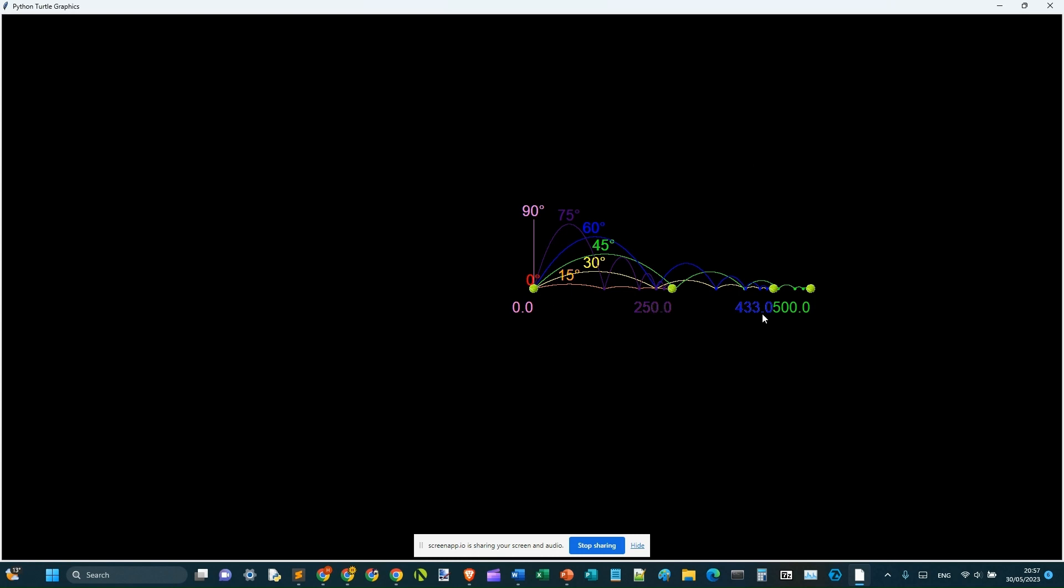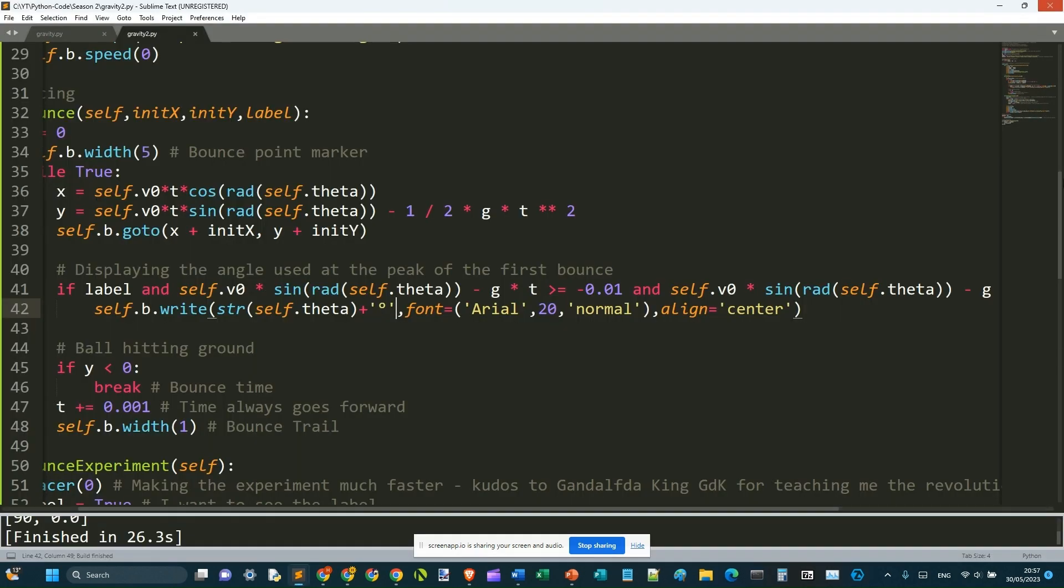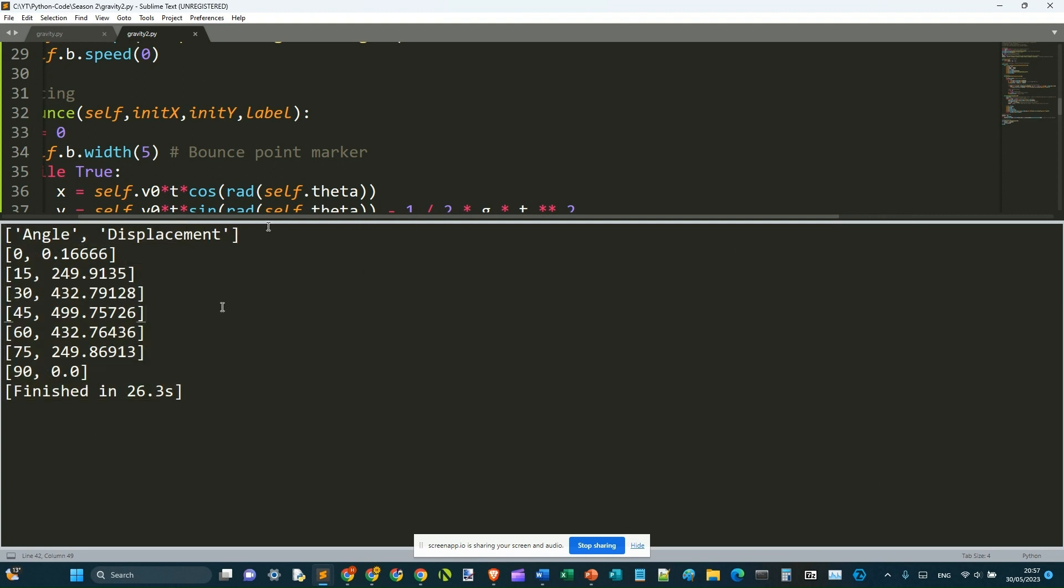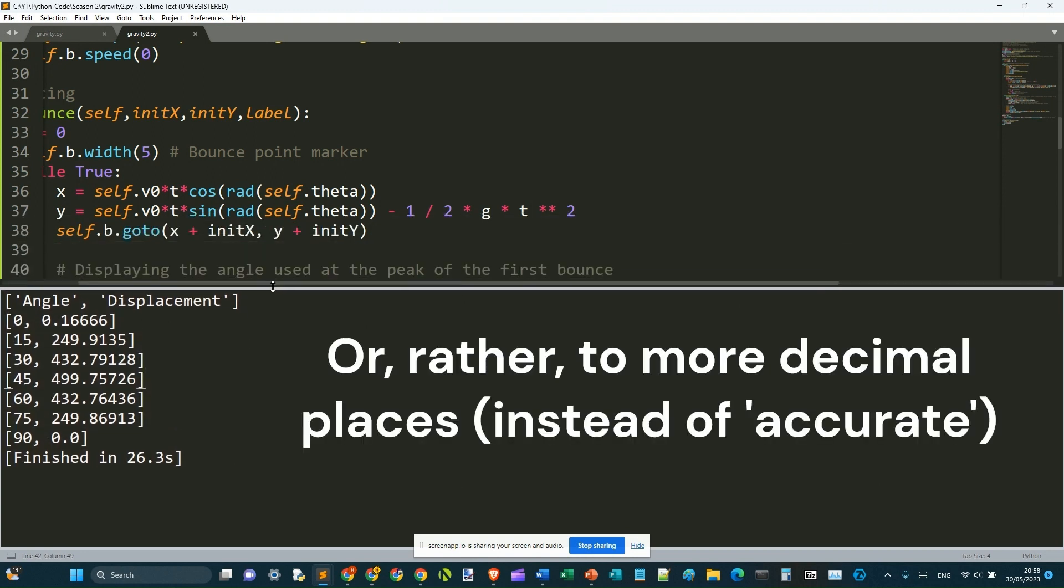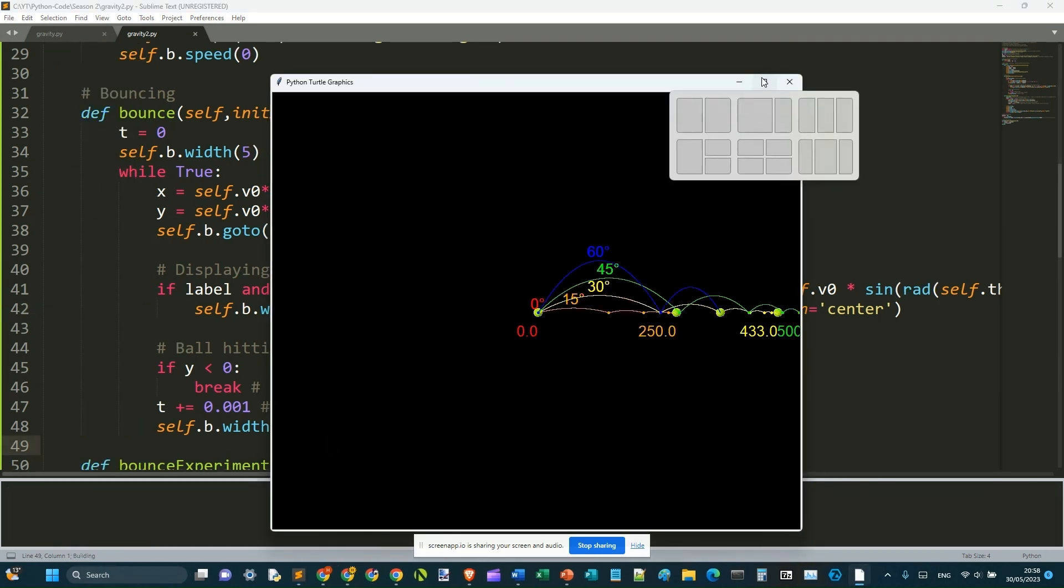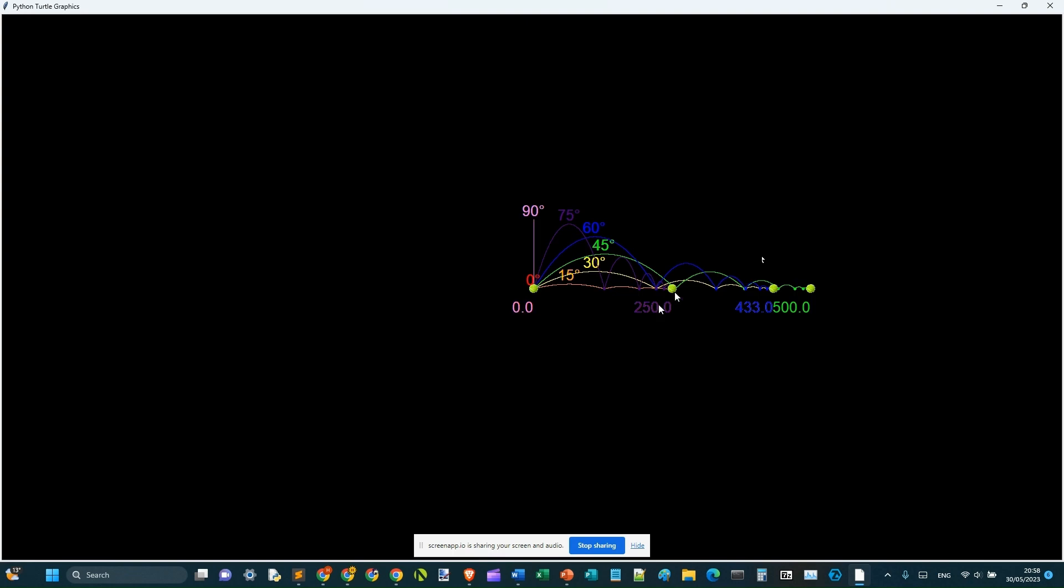So those are all the results that we could get from here. And I'm going to close this so that we could display the results on the displayed physical graph here. They're more accurate. Let's see what results. Sorry. 30 degrees and 60 degrees angles travel in the same distance of 433 meters. And so does 75 and 15 and 90 and 0. 45 degrees went the furthest. So the last part of the video is answering why.